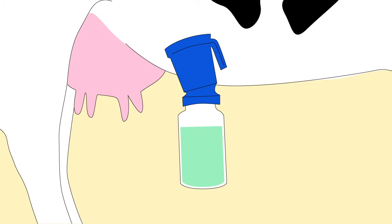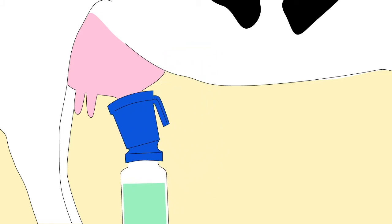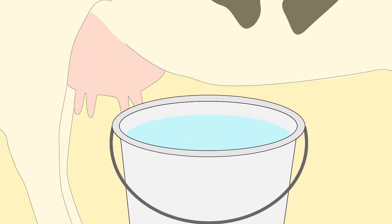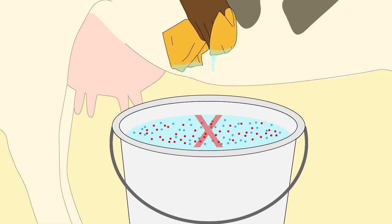Either use a pre-dip to clean the teat or four corners of a damp cloth should be used to wash the four quarters. The cloth should not be returned to the bucket.